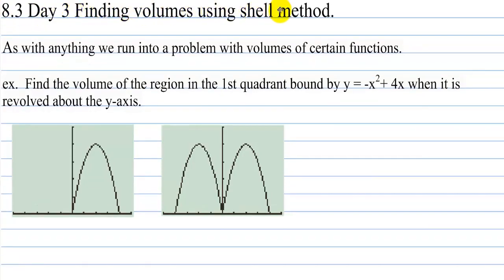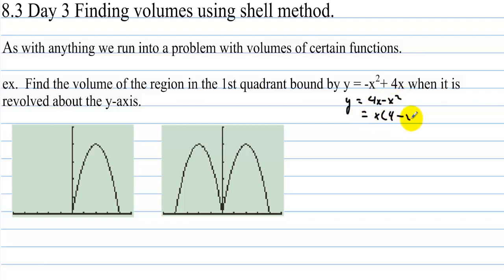Section 8-3, day 3: finding volumes using the shell method. As with anything, we run into a problem with volumes of certain functions. Example: find the volume of the region in the first quadrant bounded by y equals negative x squared plus 4x when it is revolved around the y-axis. If we factor out an x, we have y equals x times (4 minus x), giving zeros of 0 and 4. This is a downward-opening parabola. If we rotate this around the y-axis, we get its 180-degree reflection.